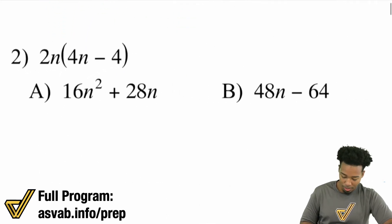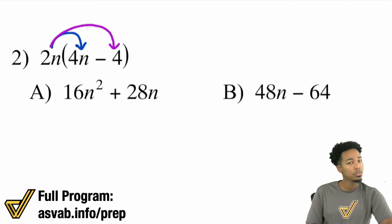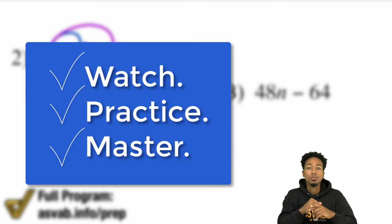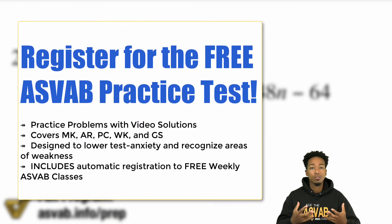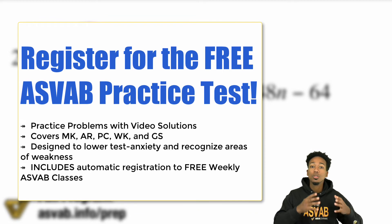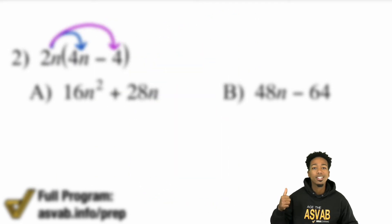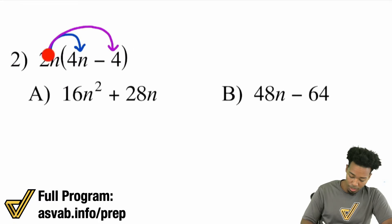Number two: we're going to do two N times four N, and then two N times negative four. Remember, acing the ASVAB is not just about watching — it's about watching, practicing, and mastering the material. The best way to do that is to start with the free practice test, because it comes with video solutions. Try it yourself, see the mistakes you've made, then keep raising your score. It's completely free — click the link in the description. Let's get back to the problem. Two N times four N.